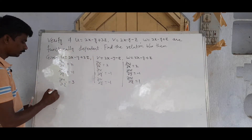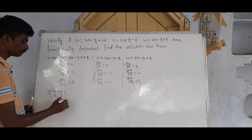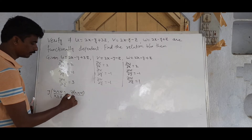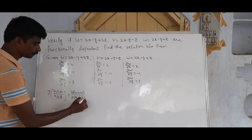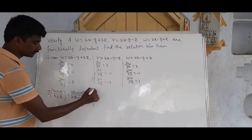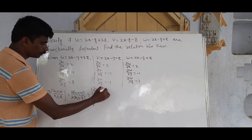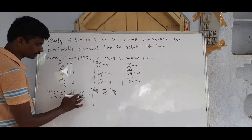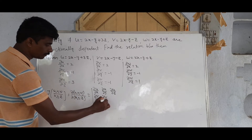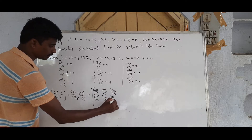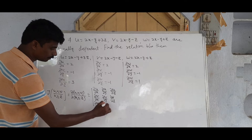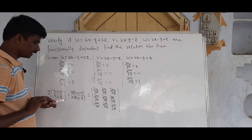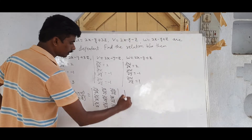So J of (u, v, w) / (x, y, z) equals the determinant with rows: [2, −1, 3], [2, −1, −1], [2, −1, 1].